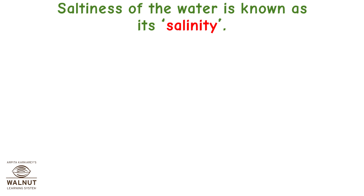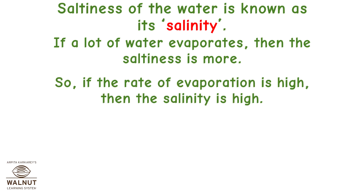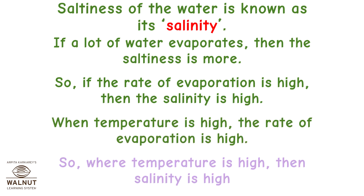Saltiness of the water is known as its salinity. If a lot of water evaporates, then the saltiness is more. So if the rate of evaporation is high, the salinity is high. When temperature is high, the rate of evaporation is high — so where temperature is high, salinity is high.